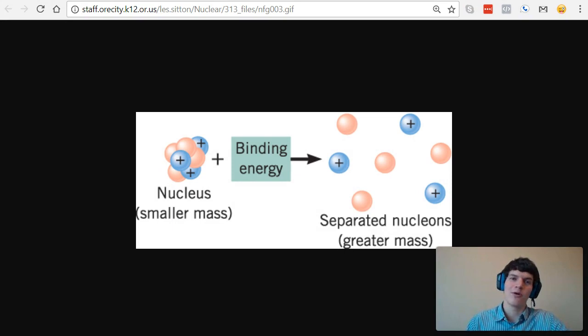Now in order to properly approach this question, we need to understand what happens as neutrons and protons are separated from an atom. As you can see in this image, in order to separate neutrons and protons from each other, we need to input what is called binding energy.